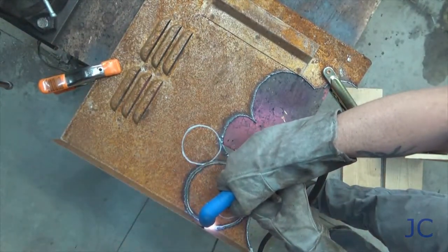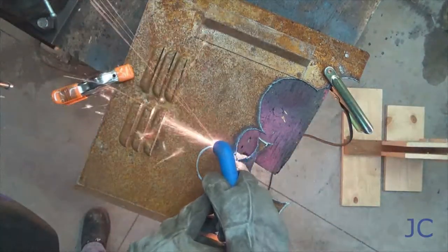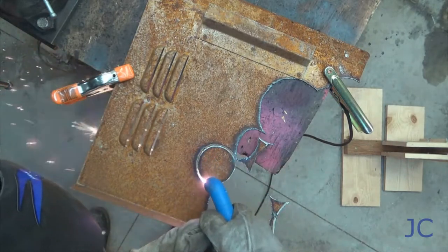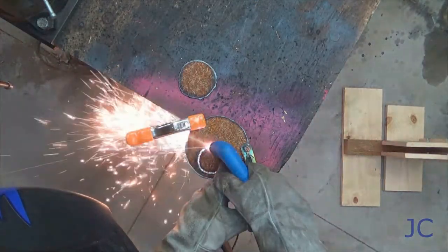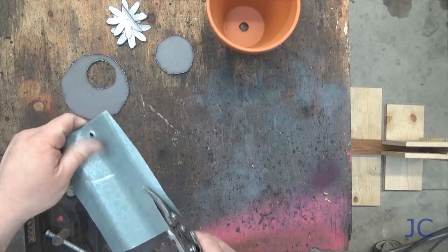You can cut these shapes out however you're able to with a saw or a torch. I'm using a plasma cutter. The hole in the larger metal piece is going to be for the solar unit that we're going to install to make the flower light up. Make sure that you have measured your solar unit to fit accurately.